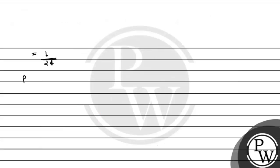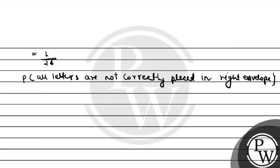Now we have to find the probability that all letters are not correctly placed in the right envelope. Using the total probability rule: P(not all correct) = 1 minus P(all correct). That is 1 minus 1 upon 24, which gives us 23 upon 24. So the probability that all letters are not correctly placed in the right envelope is 23 upon 24.